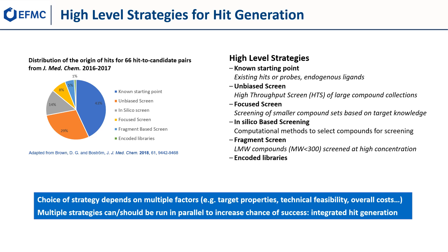The choice of strategy depends on multiple factors, such as target properties, technical feasibility, and overall costs. Multiple strategies should be run in parallel to increase the chance of success, and this is called integrated hit generation.